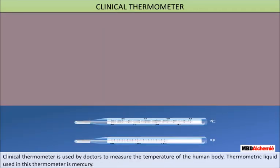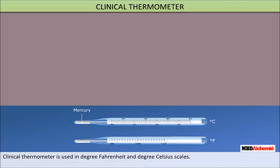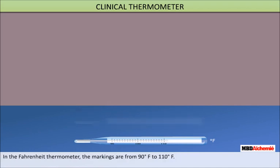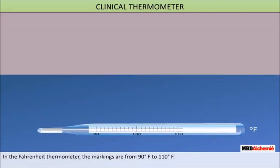A clinical thermometer is used by doctors to measure the temperature of the human body. The thermometric liquid used in the thermometer is mercury. The clinical thermometer is used in degree Fahrenheit and degree Celsius scales.